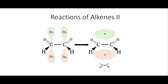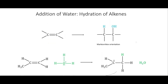In this video I'm going to continue our discussion of reactions of alkenes, and in particular the addition reactions of alkenes — turning a double bond into a single bond between carbons while adding other groups onto those two carbons. In particular in this video I'll be talking about adding alcohol groups onto these double bonds. The first one we'll talk about is the addition of water, so this is called the hydration of alkenes.